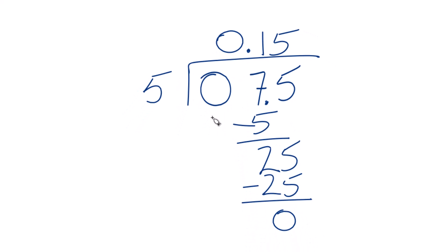So 5 goes into 0.75, 0.15 times. And you can check that, because you can just multiply 5 times 0.15, and you'll get 0.75. So that means we did that correctly.